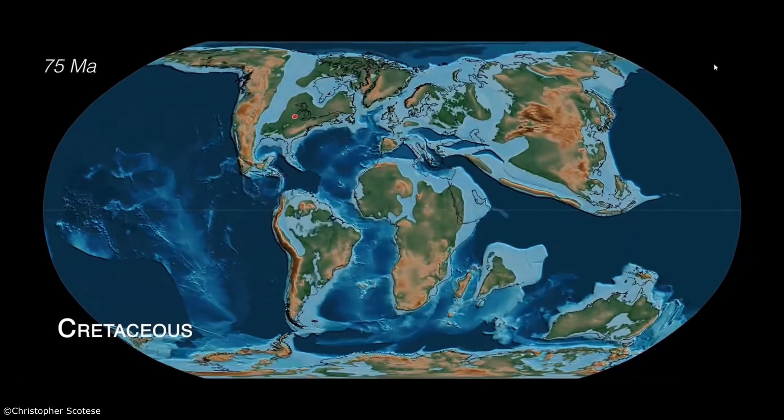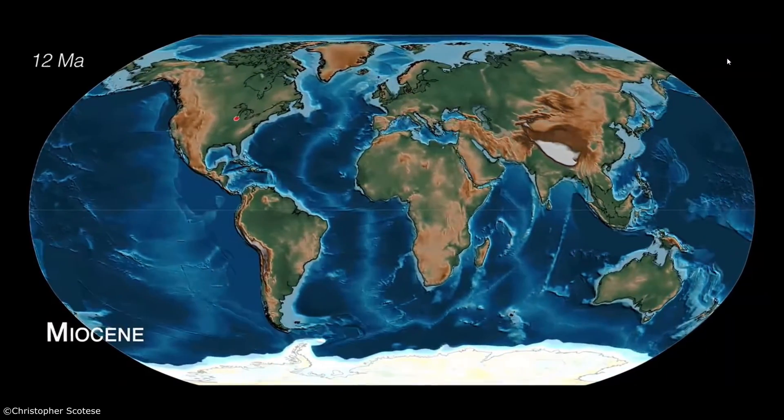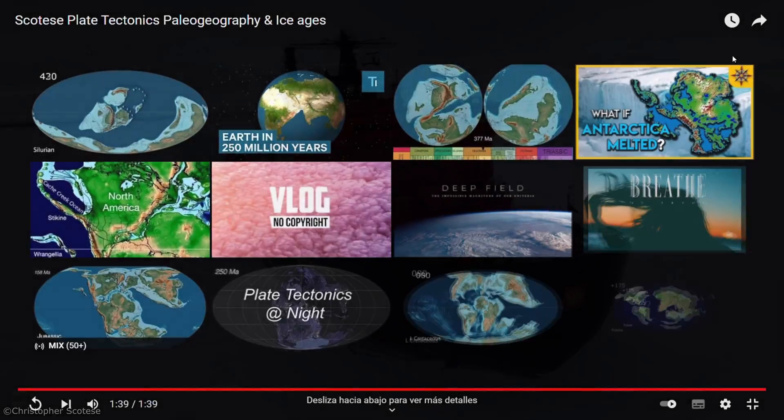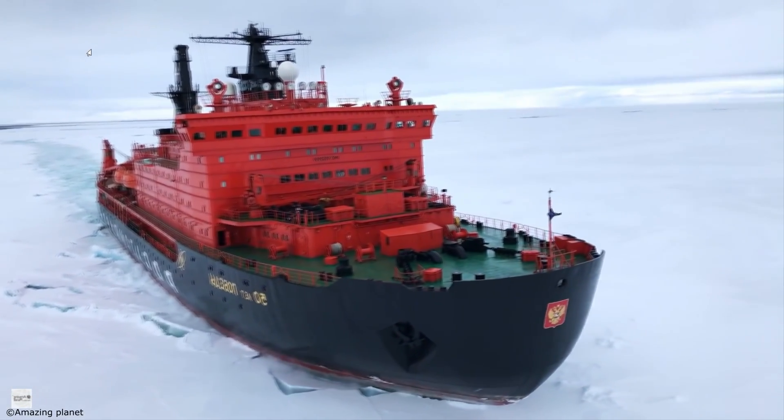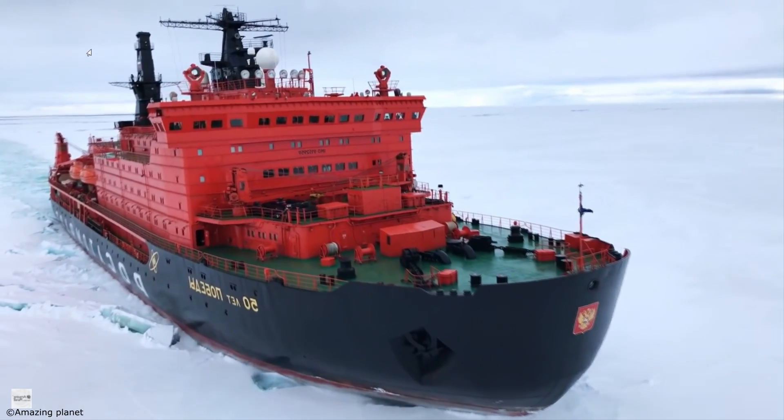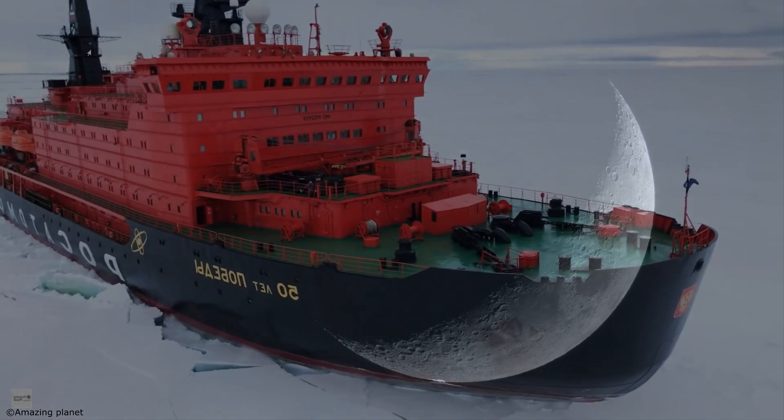But how did the continents move? Wegener became very excited, and supposed that the continents would be more rigid than the ocean floor, and could move by breaking it apart like an icebreaker. And what would cause that movement? Well, the attraction of the moon, which, just like it causes tides, could cause the displacement of continents.